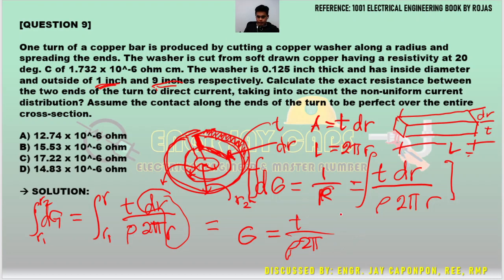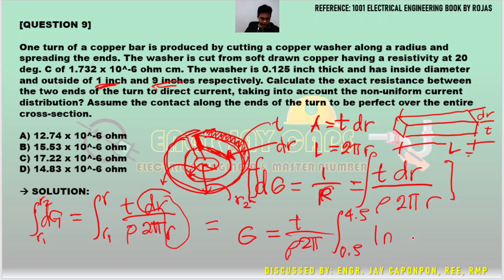The limits are 0.5 inch to 4.5 inch. The integral of dr over r is ln r evaluated from R1 to R2, giving ln(4.5) minus ln(0.5), which equals ln(4.5/0.5) = ln(9).